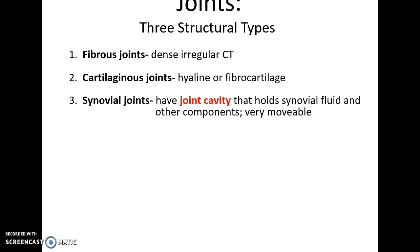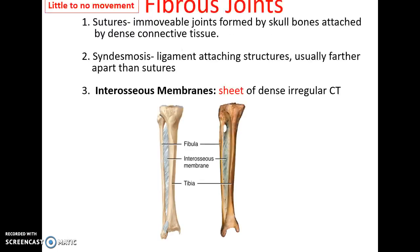There are three kinds of joints structurally. There are fibrous joints, where two bones are connected by dense, irregular connective tissue — very immobile. There are cartilaginous joints, where the bones are connected by either hyaline cartilage or fibrocartilage — those tend to be slightly immobile. And then synovial joints, which have a joint cavity filled with synovial fluid, and synovial joints are very movable.